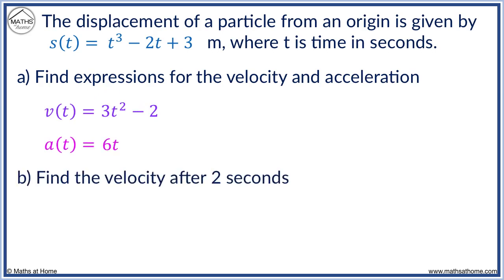Now we will find the velocity after 2 seconds. We simply take the velocity equation and sub in T equals 2. We get 3 times 2 squared minus 2. This equals 12 minus 2, which equals 10. The units are meters per second.